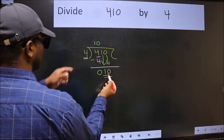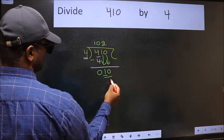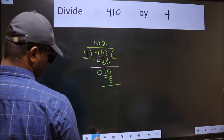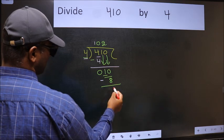A number close to 10 in 4 table is 4 twos 8. So we should subtract. We get 2.